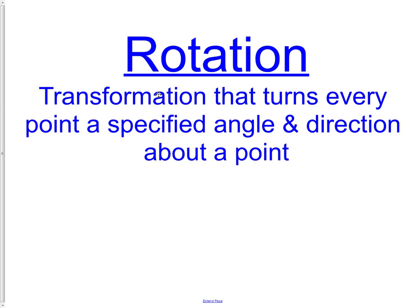It is a transformation that turns every point a specific angle and direction about a point. Remember when we talked in 9.1 about rotating something about the origin? That just means where you're rotating something at. That's like the piece that you're using to spin an object.